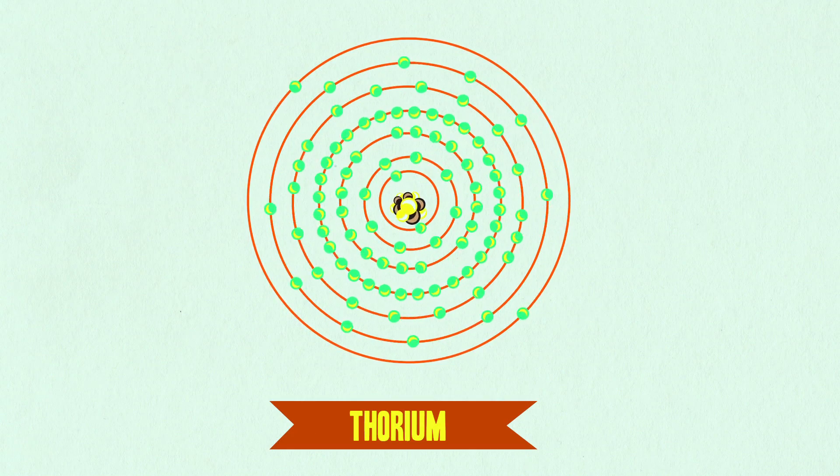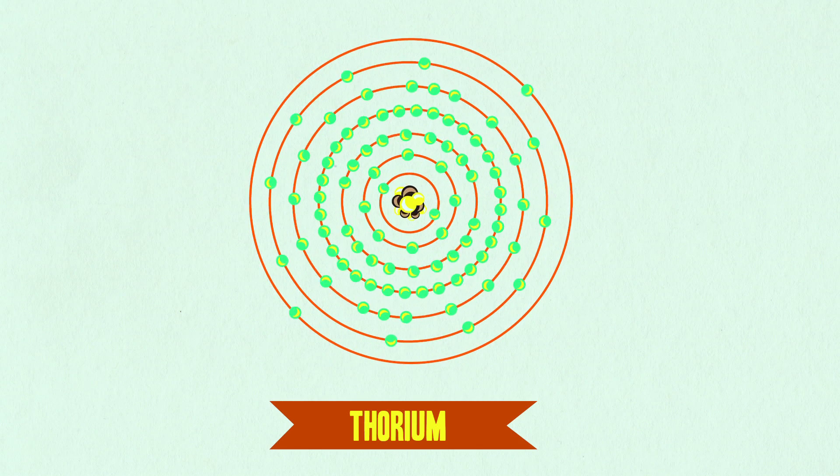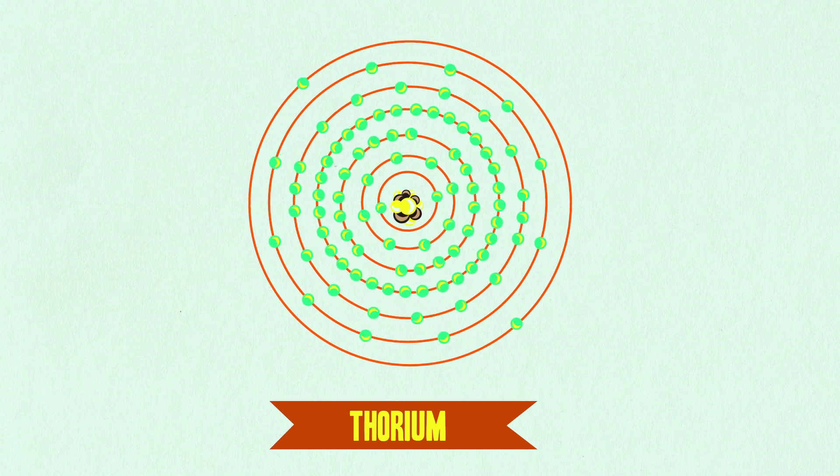Thorium is an element, a metal, that's close to uranium on the periodic table but with two fewer protons.